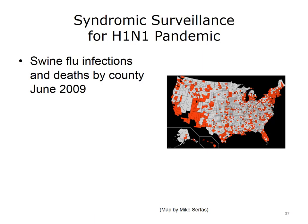During the H1N1 pandemic, public health officials were able to chart important developments in how the disease was affecting U.S. citizens. Officials plotted pediatric deaths from H1N1 across a U.S. map to determine where children were most likely to die from the disease. This assisted public health decision makers with the development of strategies designed to save lives.